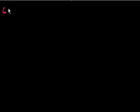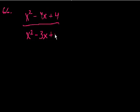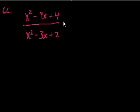We're on problem 66. It says, what is x squared minus 4x plus 4 divided by x squared minus 3x plus 2, reduced to lowest terms? So they probably want us to factor each of these quadratics and then see if any of the terms cancel out. Let's try to do that.